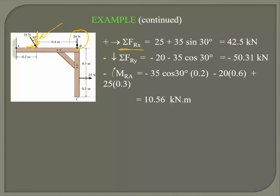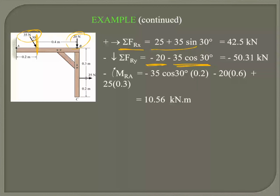The sum of all forces along x includes this force and the component of this one. The downward components are both negative — that component is downward, and this one is also downward. So we can get all the components out.